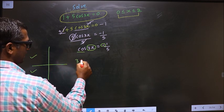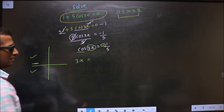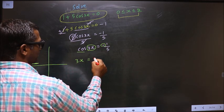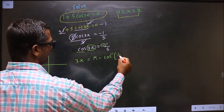So 3x equal to, to get an angle in the second quadrant, we should do π minus cos inverse 1 by 5.